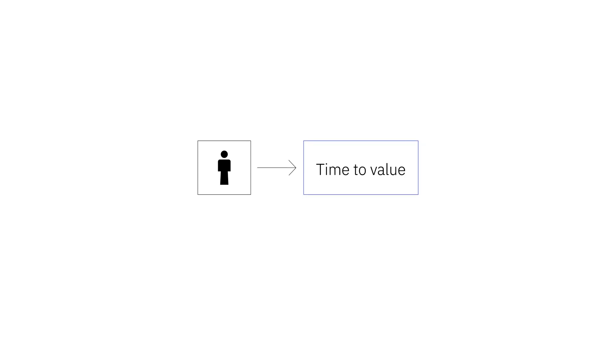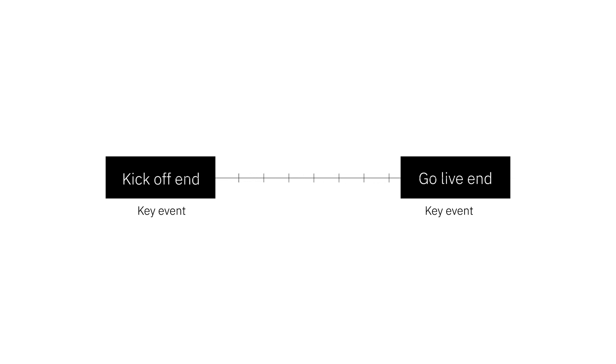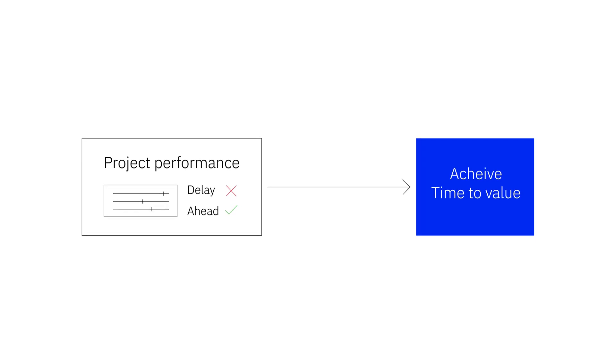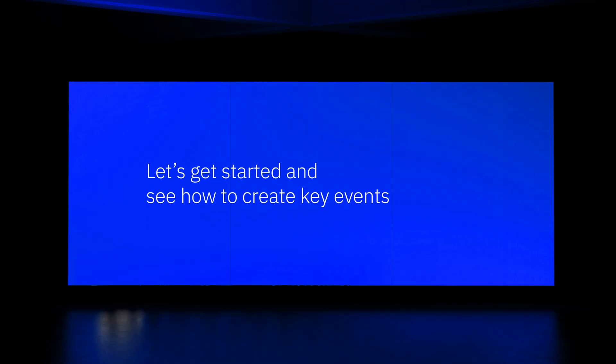A project manager aims to determine the time to value of their project. To achieve this, they must calculate the duration between the kickoff and go live end dates. Here, kickoff and go live end dates will be the key events they need to capture, and the number of working days between these two key events will be the interval they need to measure. This helps the project manager track project performance and achieve their time to value goal.